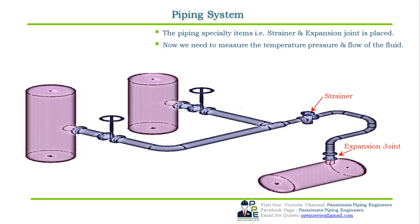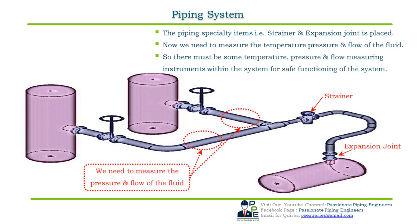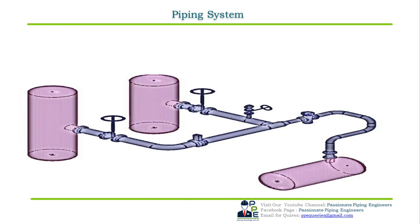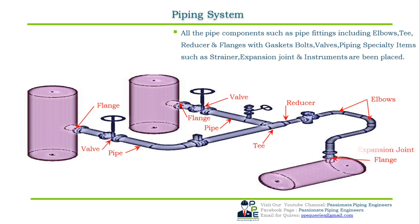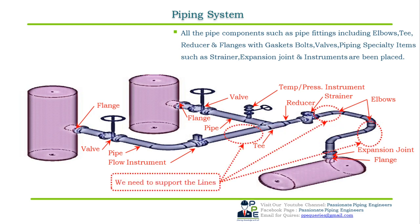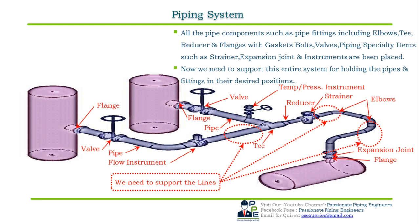Apart from temperature and pressure, we also need to measure the flow rate. So there must be temperature, pressure, and flow measuring instruments within the system, which will ensure safe and precise functioning. All piping components — including elbows, tees, reducers, flanges, gaskets, bolts, valves, specialty items such as strainer and expansion joint, and instruments — have been placed. To keep the entire system in the desired location, we also need to support the system with pipe supports.